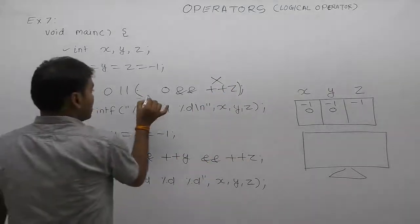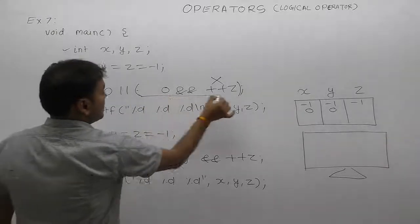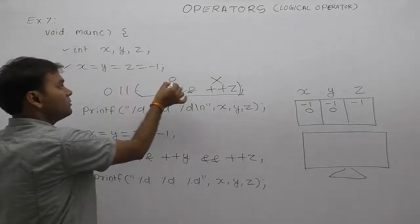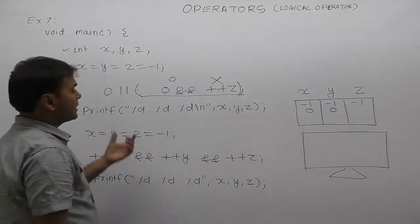Therefore second condition tested, then OR with respect to first is false. Second condition is also false. Therefore overall result is 0, means false. Value of x, y, z is 0, 0, minus one.